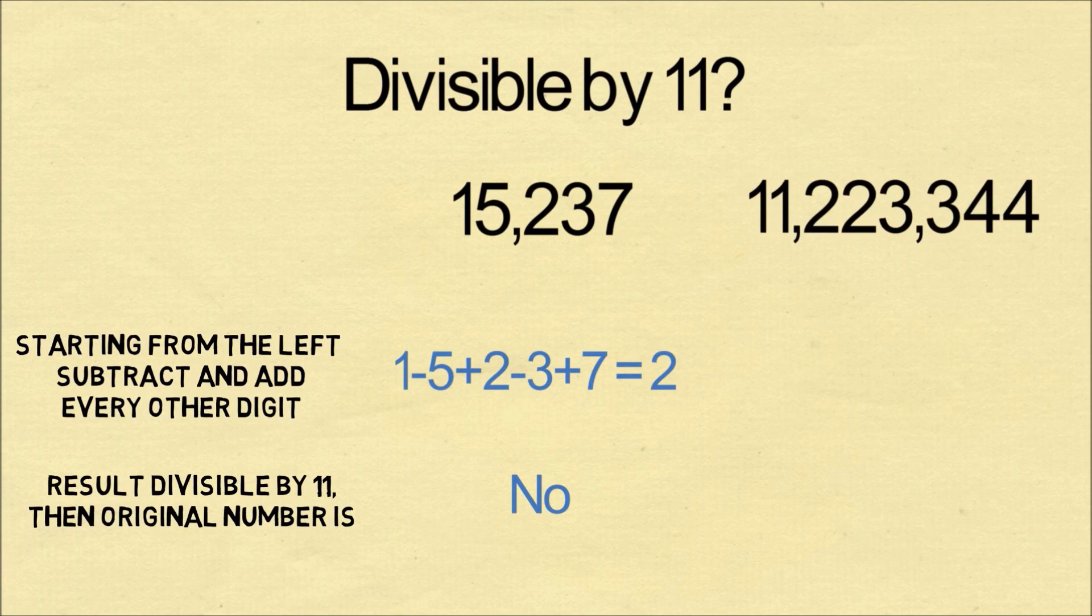Let's do 11,223,344. We could take the alternating sum, but we can easily see every other digit cancels out the digit before. So we know 0 is the result. 0 is divisible by 11, so the original number is also divisible by 11.